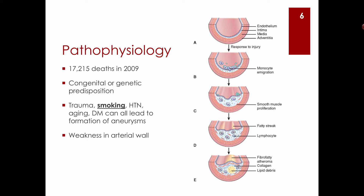A few years ago, the latest data showed 17,000 deaths from aneurysms. There is a genetic predisposition, and sometimes they can be congenital. We think of Marfan syndrome, like Abraham Lincoln. Risk factors include trauma, smoking, hypertension, aging, and diabetes. Ultimately it's atherosclerosis that causes this, but in a different form than the coronary disease you may have studied before.